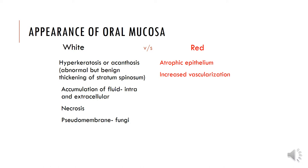The appearance of the oral mucosa is either white or red. We are not talking about other variations in color, like pigmentation due to melanin or other sources. When there is a white lesion, it could be because of hyperkeratosis or acanthosis due to abnormal but benign thickening of the stratum spinosum, accumulation of fluid in the intracellular or extracellular components, necrosis, or pseudomembrane generally caused by fungi. When there is a red lesion, it could only be because of atrophic epithelium or increased vascularization.